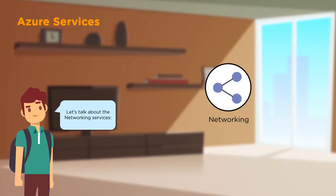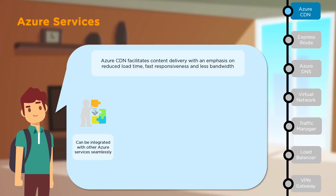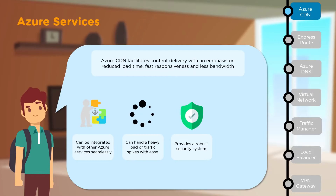Now let's look at the networking services. First, we have Azure CDN or the Content Delivery Network. With Azure CDN, you get the ability to deliver your content with reduced load times, fast responsiveness and less bandwidth. CDN can be integrated with several other Azure services to move processes at a faster rate. It can handle heavy loads and traffic spikes with ease, provides a robust security system, and delivers advanced analytics on how customers are using your content.